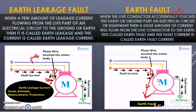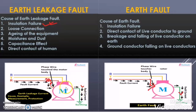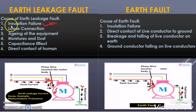Now let us try to understand what are the different causes of earth leakage fault and what are the different causes of earth fault. So the first cause of earth leakage fault is insulation failure. As we know the motor has windings and these windings have insulation. Suppose due to any reason like overload condition, some part of the winding insulation deteriorates and it is touching the body of the motor. That time the current will flow through the winding and from the damaged insulation point the current will pass to the body of the motor — this is the earth leakage fault condition. So the first reason is insulation failure.